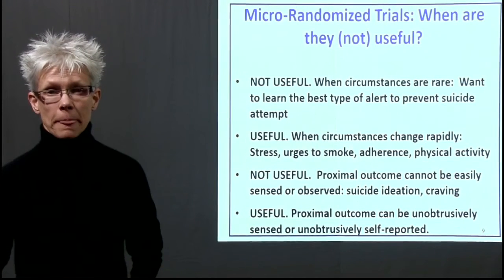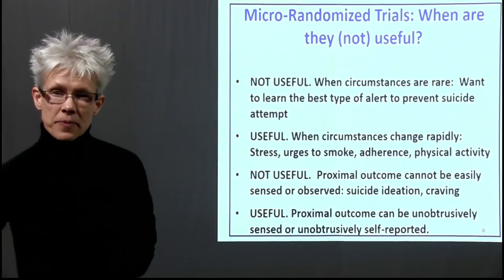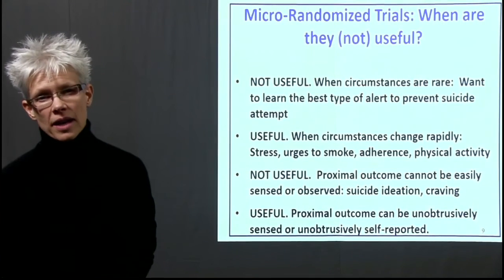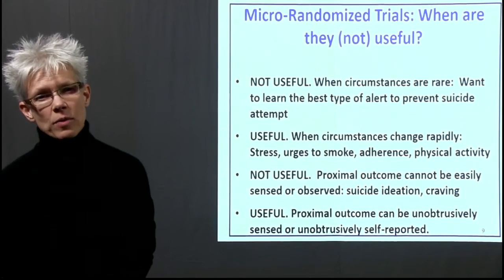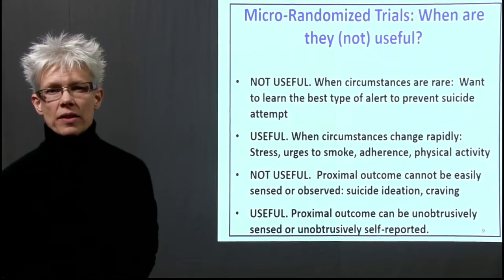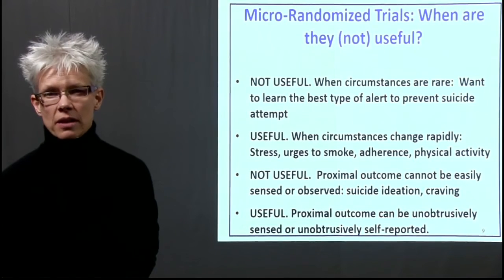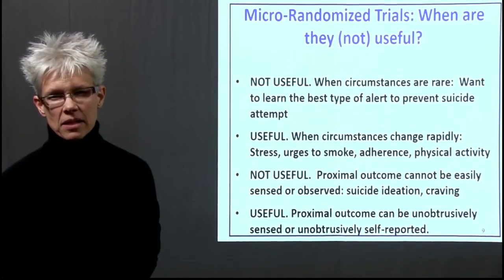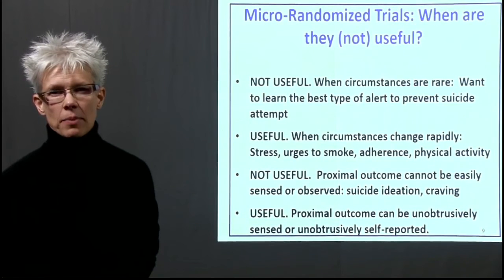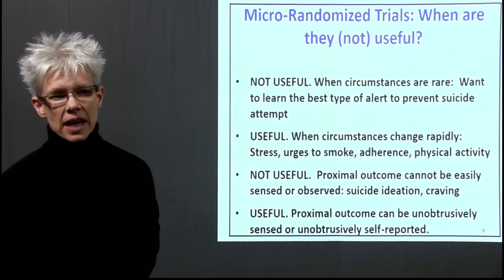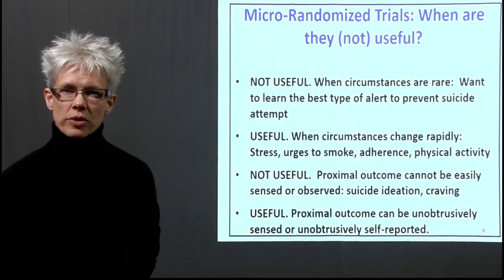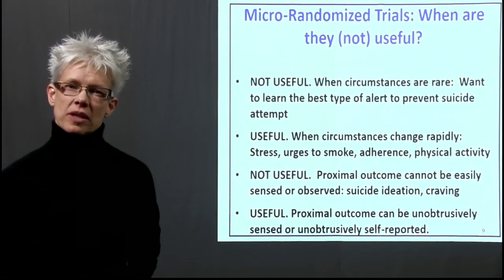Adherence urges to smoke and similar states are also well-suited. Two other considerations for whether to use a micro-randomized trial are what you can measure and how unobtrusively you can measure it. For example, can you unobtrusively measure physiological stress? How can you unobtrusively measure eating habits, food intake, and so on? As sensors develop and become increasingly more sophisticated, we'll be able to look at more and more types of behaviors, because sensors will allow us to unobtrusively collect information on eating behavior and so on.